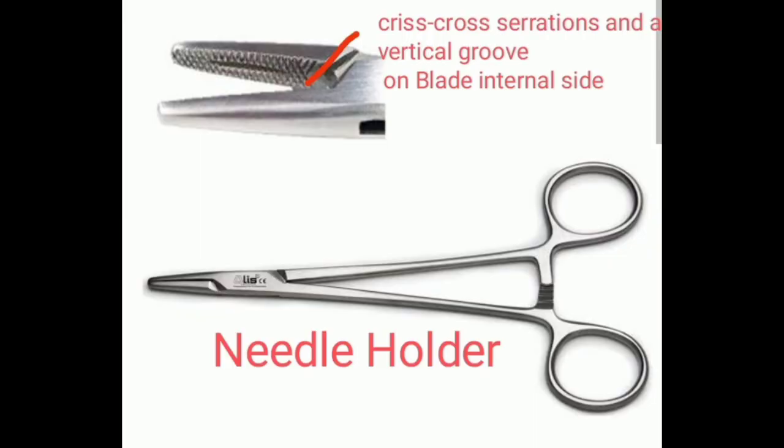This is a needle holder. The specialty of this instrument is that it has very short blades. Internally the blades have crisscross serrations and a vertical groove in the middle. The blades have crisscross serrations and a vertical groove in the middle with short blades, and the body part is long. It is called a needle holder forcep and is used to hold the needle for the purpose of suturing.